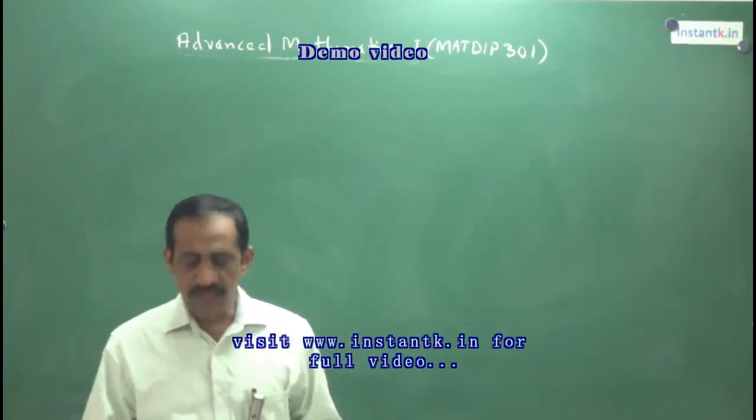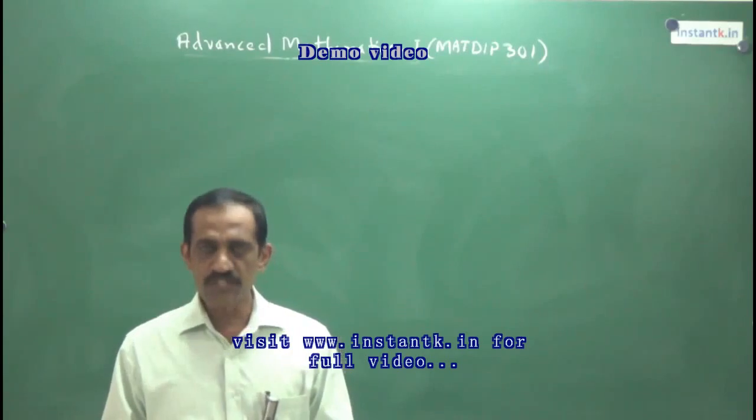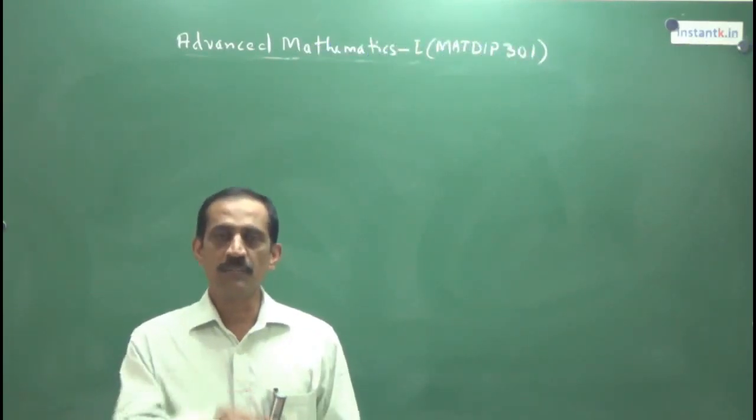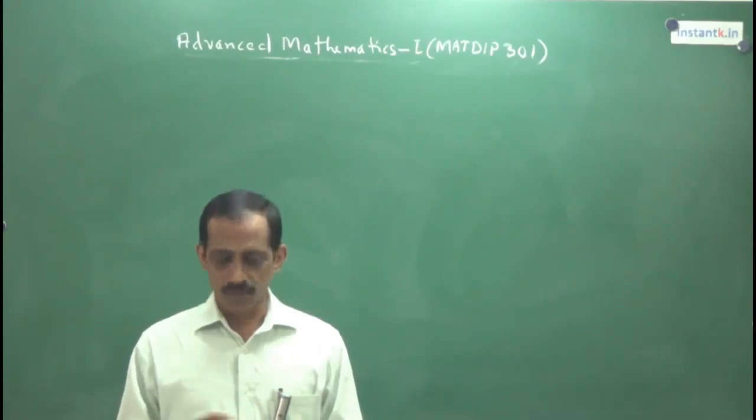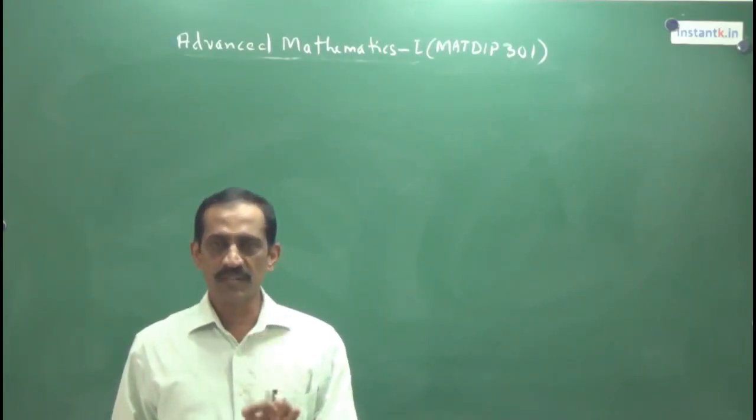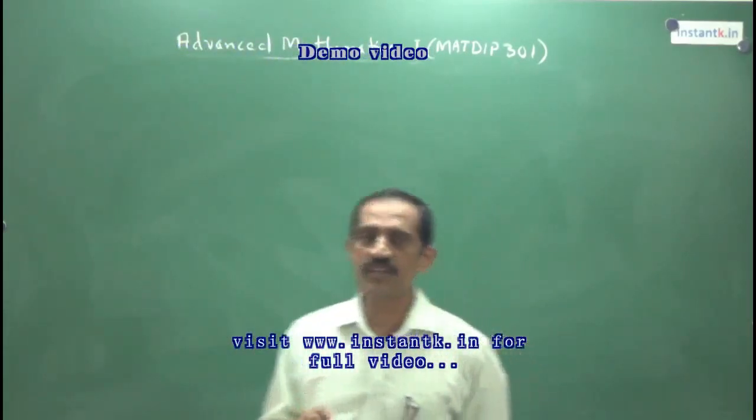But without clearing this you won't get certificate. The university never issues that certificate without completing these two subjects. So in third semester you have to complete one subject, the title is Advanced Mathematics 1, that is MAT DIP 301.